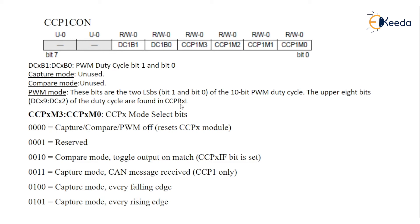The upper bits DC9 and DC2 of the duty cycle come from the 10-bit PWM. Since PWM is 10-bit and the CCPxCON register is 8-bit, the full 10-bit data is stored using CCPRxH and CCPRxL along with these 2 upper bits (bits 9 and 10) from the 2-bit field in CCPxCON.